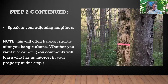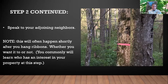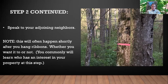Step two: speak to your adjoining neighbors. This picture shows a little pink ribbon as a temporary marker. If you look past the tree to the left, you can see the neighbor's shooting hut for hunting right on the boundary. When you do put the ribbon up, odds are you're going to communicate with your neighbors — at least the ones that have an interest in your property. It'll become obvious real quick as to who is around and who's using it.